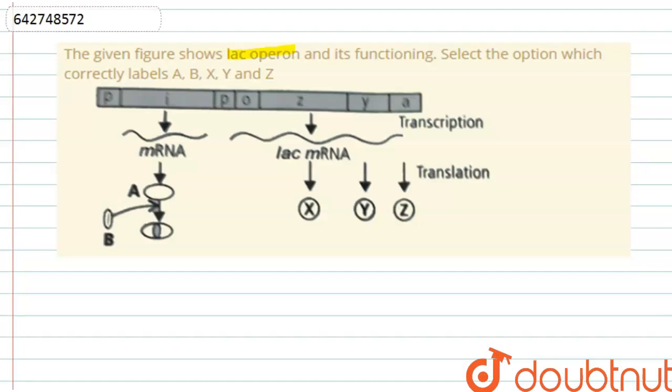Select the option which correctly labels A, B, X, Y, and Z. So we have to find out this A, B, X, and Y, Z. This is the diagram of the lac operon.